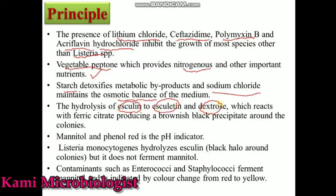Esculine and dextrose will react with ferric citrate. Once these are reacting, we get a brownish-black precipitate around the colonies. It is due to this esculine reaction. Then we have mannitol as well as phenol red, which are acting as a pH indicator. When acid is produced, the pH drops.